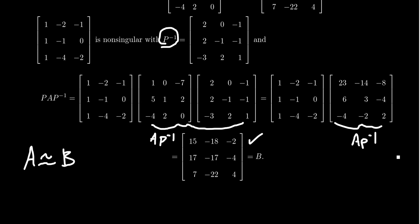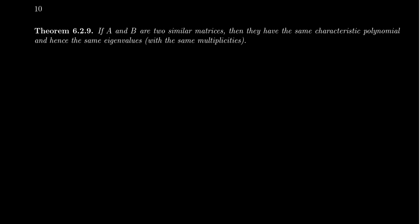There is a relationship: matrix P acts as the connector and A and B are related to each other. The key theorem is: if A and B are two similar matrices, then they have the same characteristic polynomial. And if they have the same characteristic polynomial, they'll have the same eigenvalues appearing with the same algebraic multiplicities. This is a very, very useful result.